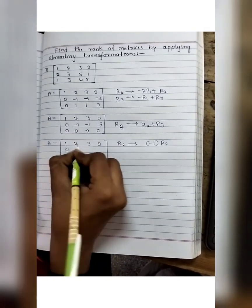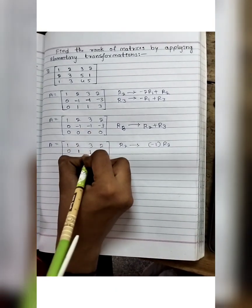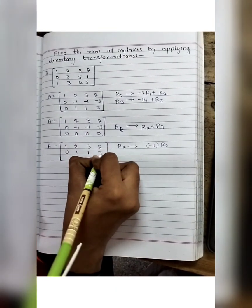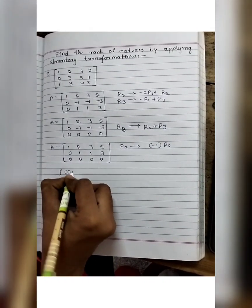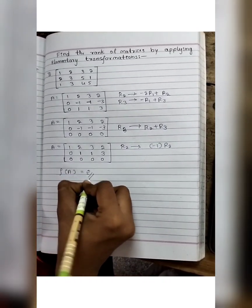Minus 1 into R2 minus 1, minus 1 into R2 1, minus 3 into R2 3. We get R3 as 0. Rank of matrix A equals 2.